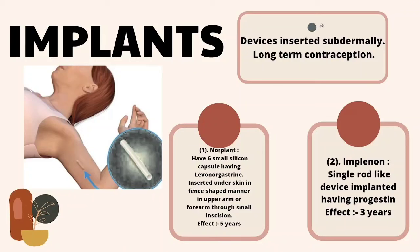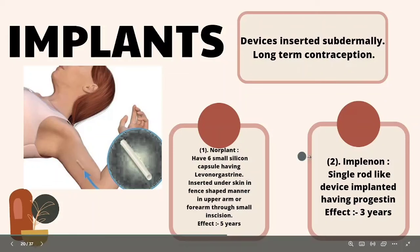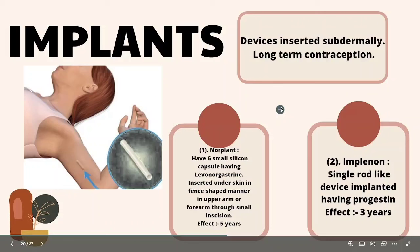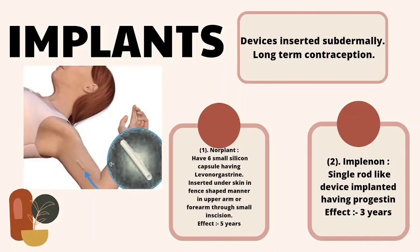Implants are devices inserted subdermally — below the skin — for long-term contraception. Norplant provides five years of contraceptive protection, and Implanon has an effective period of three years. A small incision is made below the skin and the device is inserted at the specified location as shown in the figure. Norplant contains six small silicone capsules containing levonorgestrel, which causes hormonal changes in the body that prevent implantation or fertilization.